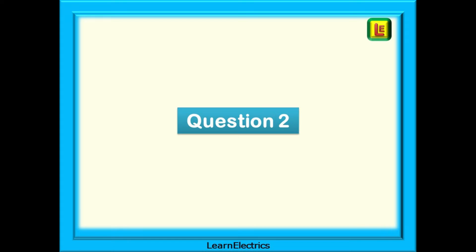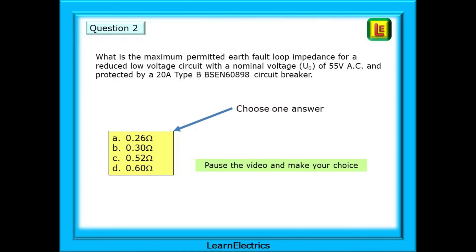Question 2 now, about reduced low voltage systems. This question is to do with 110 volt systems, as we would find on construction sites, for example. The 110 volt electrical supply is actually a 55, 0, 55 volt system. Let's look at the question. What is the maximum permitted earth fault loop impedance for a reduced low voltage circuit with a nominal voltage, U0, of 55 volts AC, and protected by a 20 amp type B, BS EN 60898 circuit breaker? Pause the video and make your choice, choosing just one answer from the four offered.